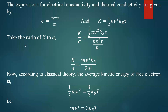We have to prove that k divided by sigma is directly proportional to temperature T. Taking the ratio of k to sigma: thermal conductivity k divided by electrical conductivity sigma equals one-half n v squared k_B tau, divided by n e squared tau divided by m. Tau cancels, n cancels, and we get m v squared k_B divided by 2 e squared.